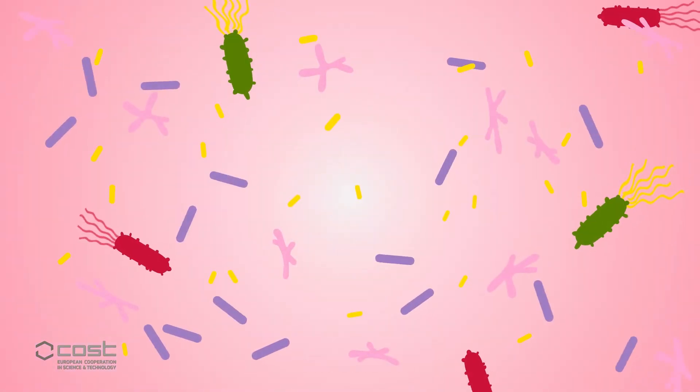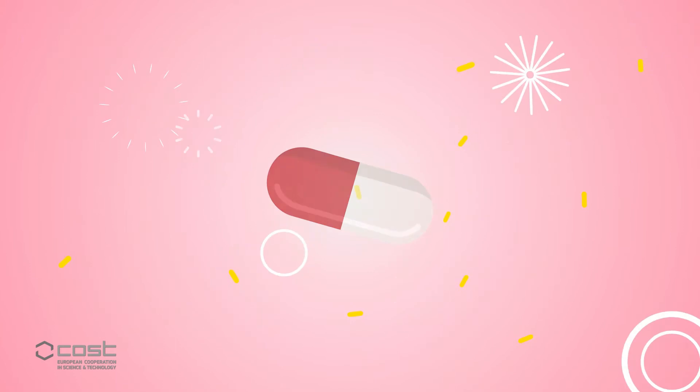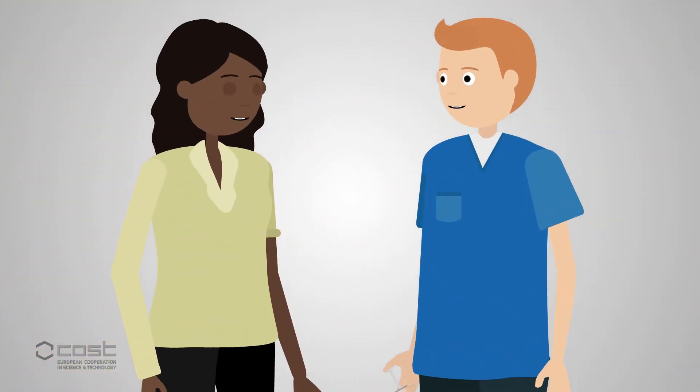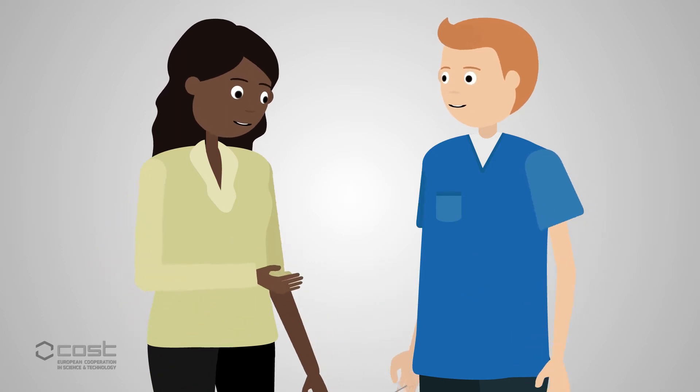One thing we're certain of? Vaccinations stop infectious diseases. But if we can only afford to vaccinate a limited number of people, or if a very infectious disease needs to be stopped quickly, who should be targeted?